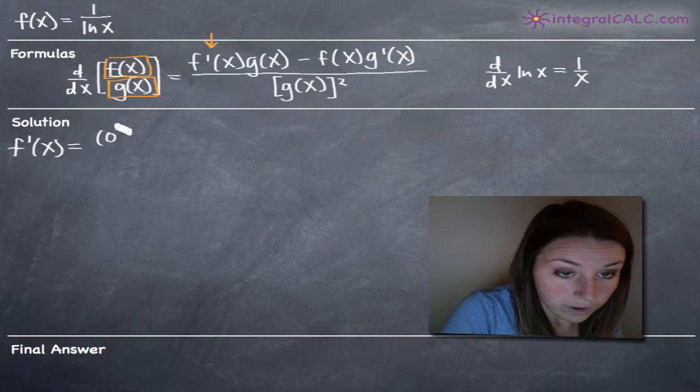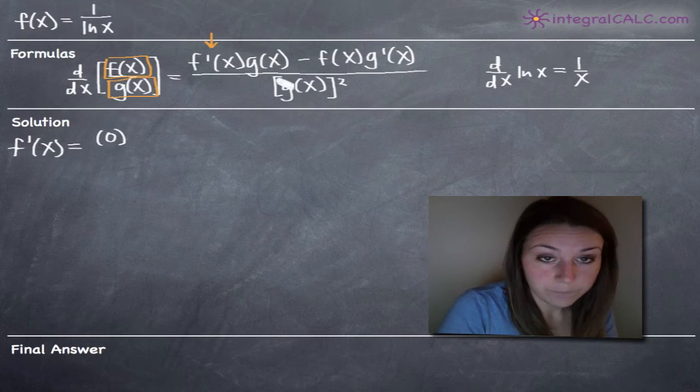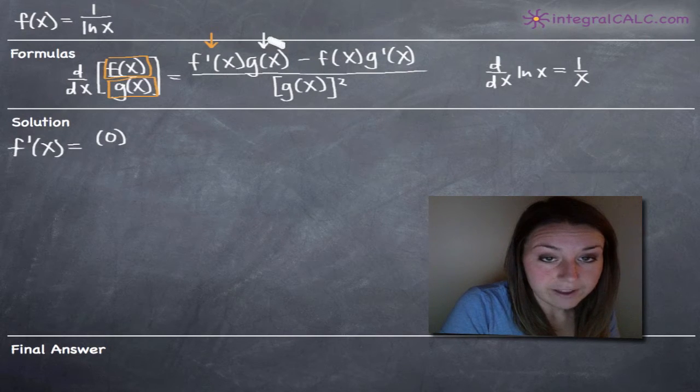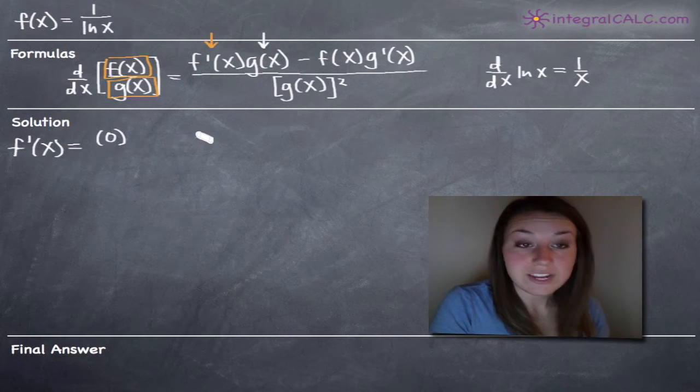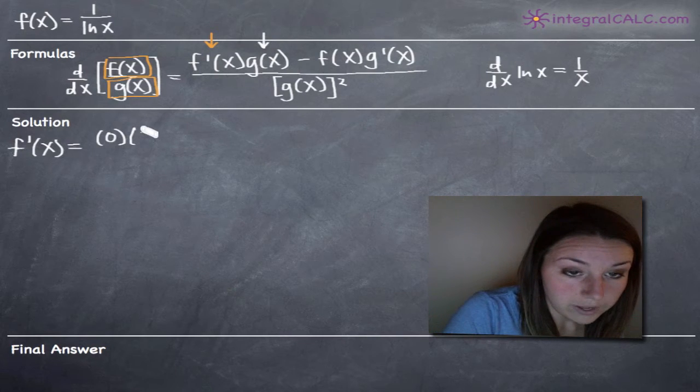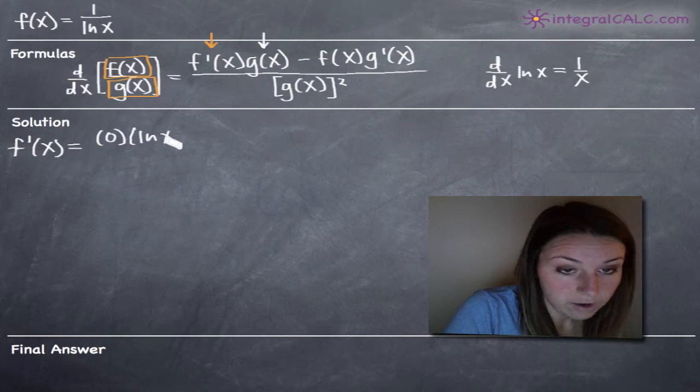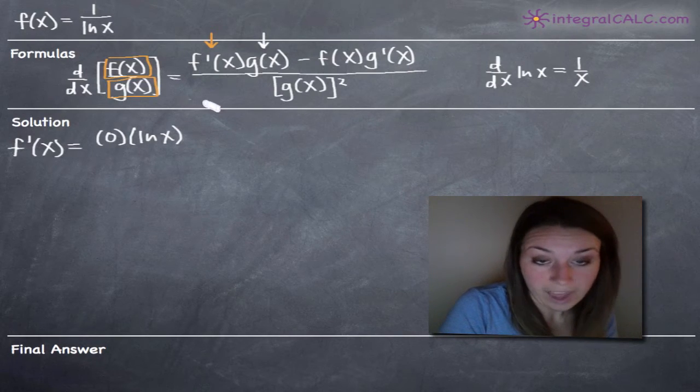So for f prime of x, we've got 0. Then we need g of x which is the denominator exactly as it is without doing anything to it. So we're going to be multiplying this times the natural log or ln of x, our denominator.